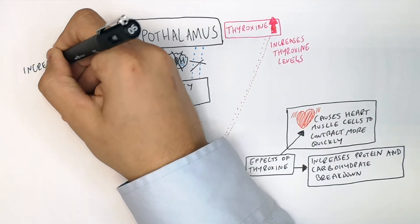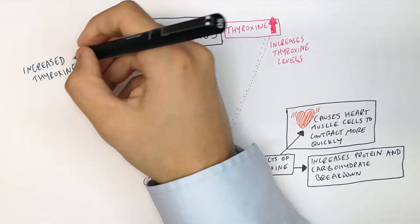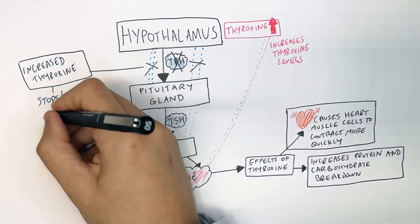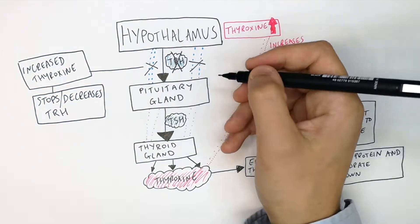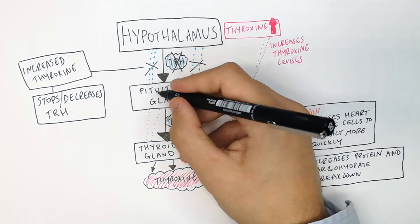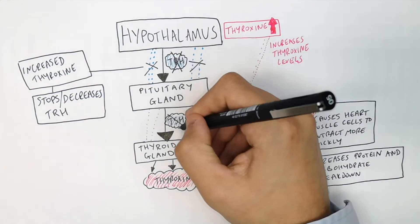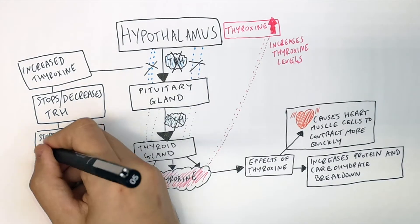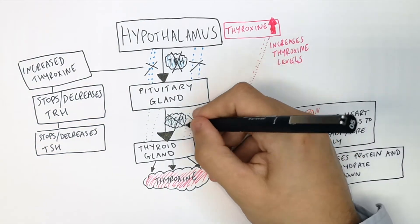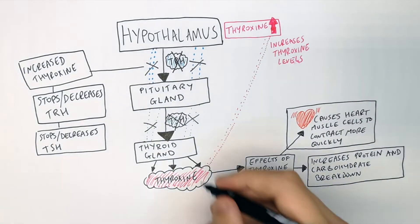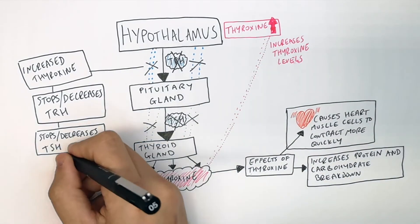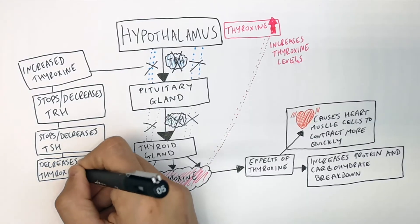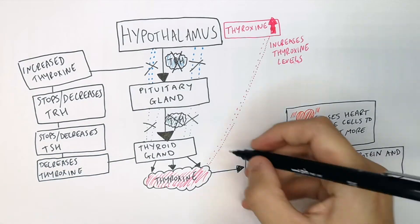Increased thyroxin levels in the blood stop or decrease TRH production, which in turn stops or decreases TSH production by the pituitary gland, because there is no TRH or less TRH being produced.